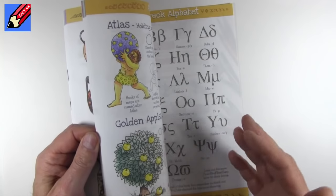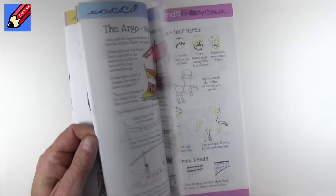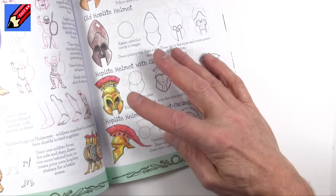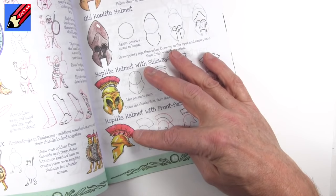There is loads of stuff in my book, how to draw ancient Greek stuff, and I'm going to be doing lots of videos from here. But today I'm going to show you how to draw an ancient Greek helmet, a hoplite helmet.